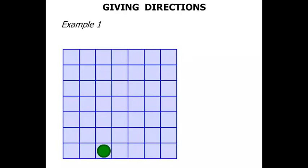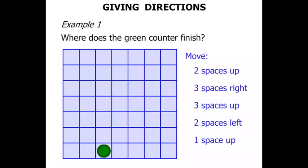Example 1. We've got a grid with a green counter. And we're asked where does the green counter finish? So we've got some directions to follow. It's going to finish either A, B, C, D, E, F or G. It's going to finish in one of those spots.